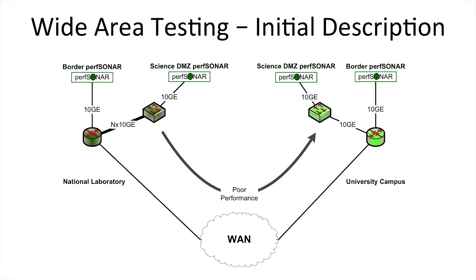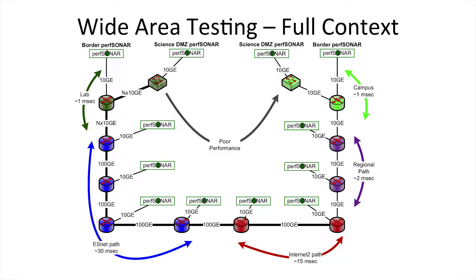It's a simple network diagram: there's some stuff at a lab, some stuff at a university, there's this network in the middle, and it's not doing what we need it to do. So as a performance engineer, your job is to expand the path out — use traceroute, use whatever tools we have available to look at what the network path looks like and also where the performance testers are located in that path.